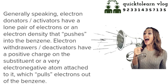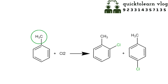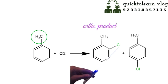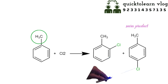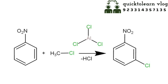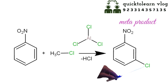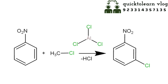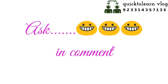For example, in toluene, the methyl group is an activator and directs chlorine to attack at the ortho and para positions, so two isomers are found. In the case of nitrobenzene, -NO₂ is the first substituent attached, and it directs chlorine to attack at the meta position because -NO₂ is a meta directing group.